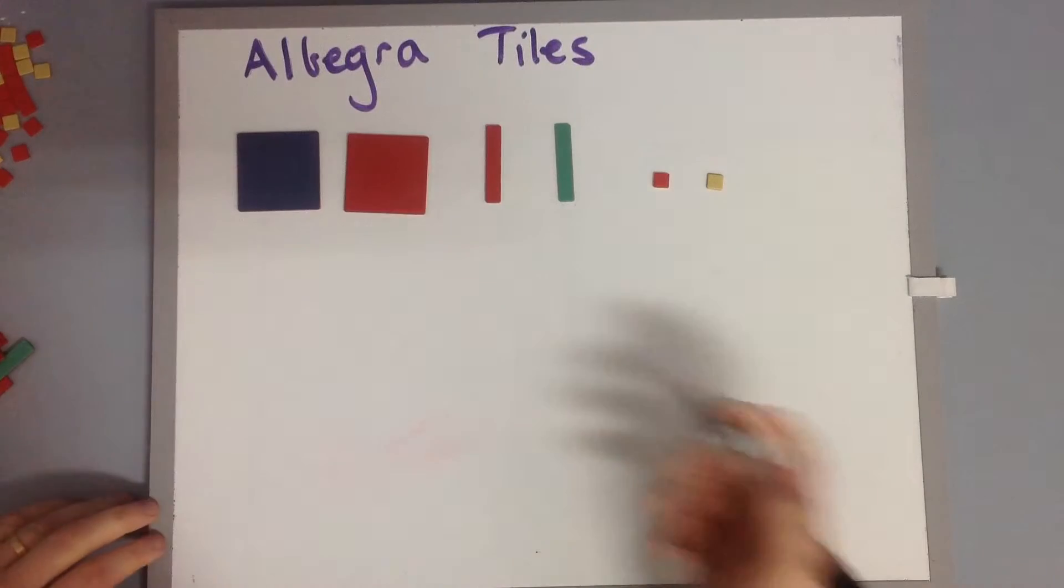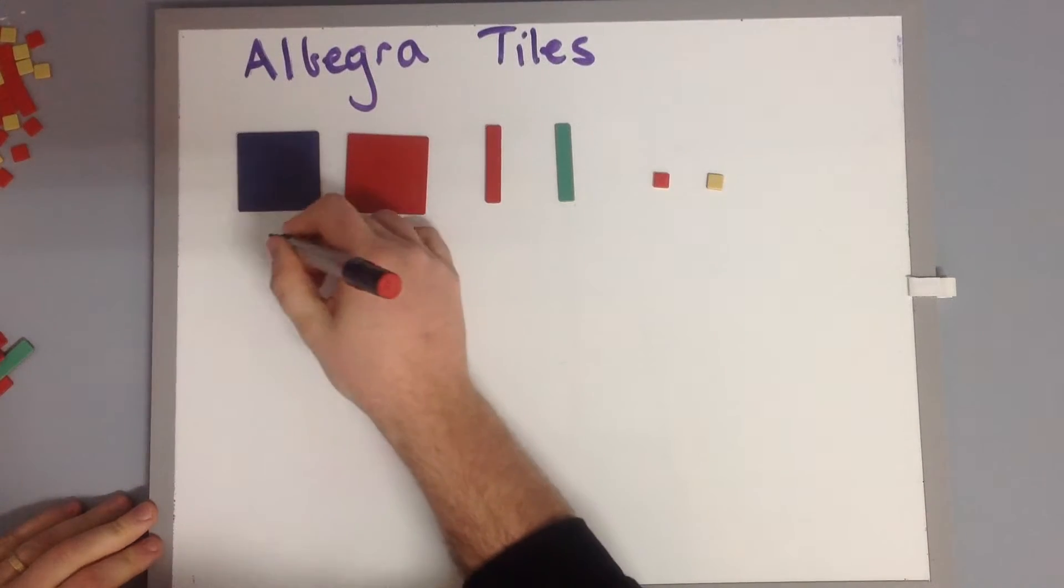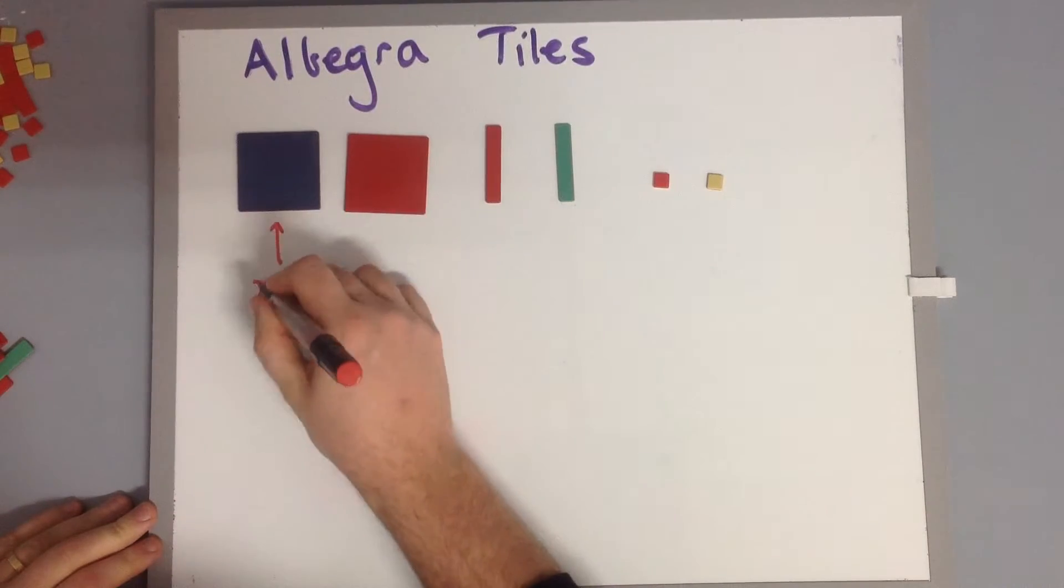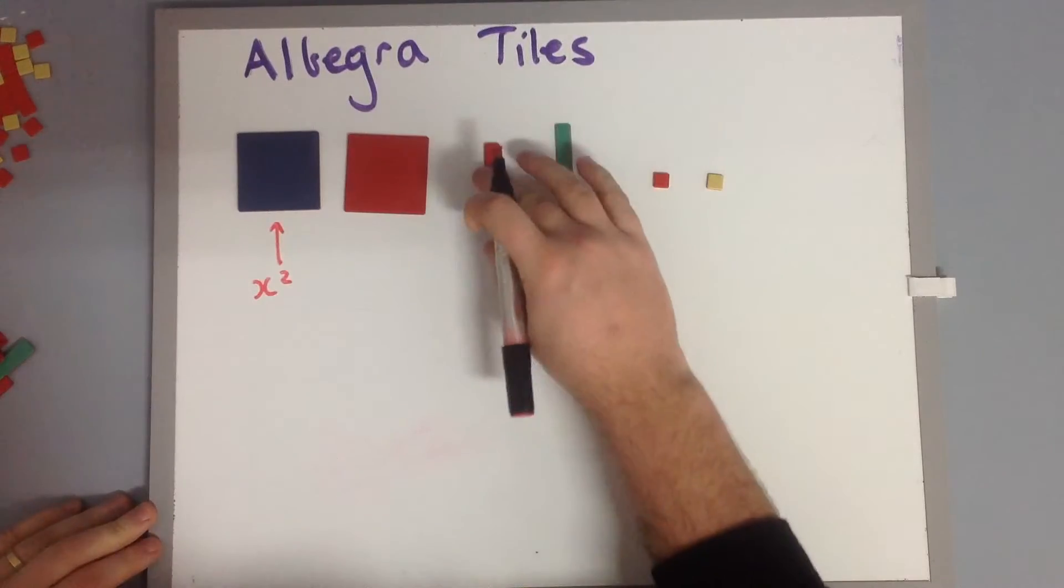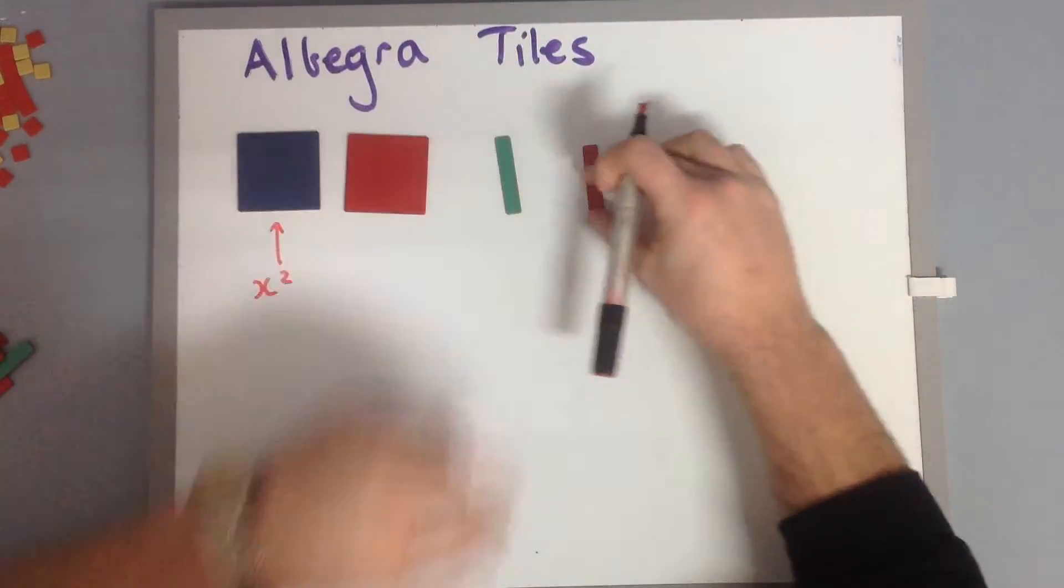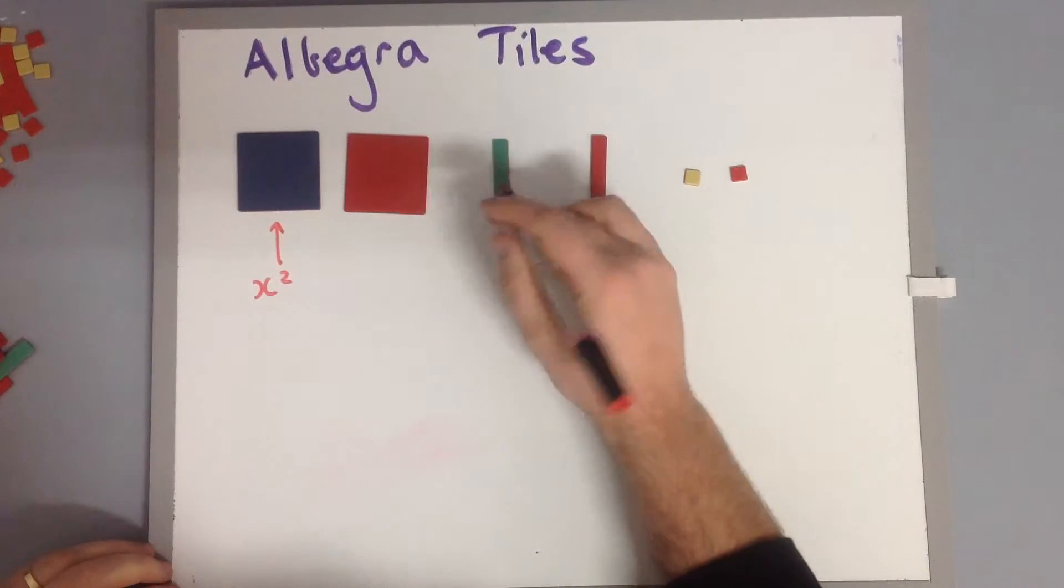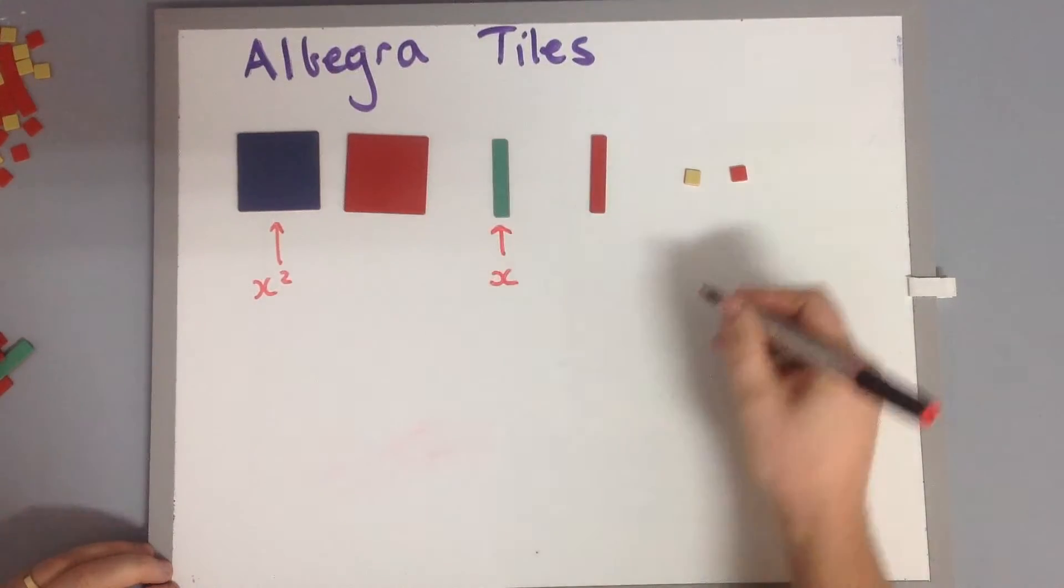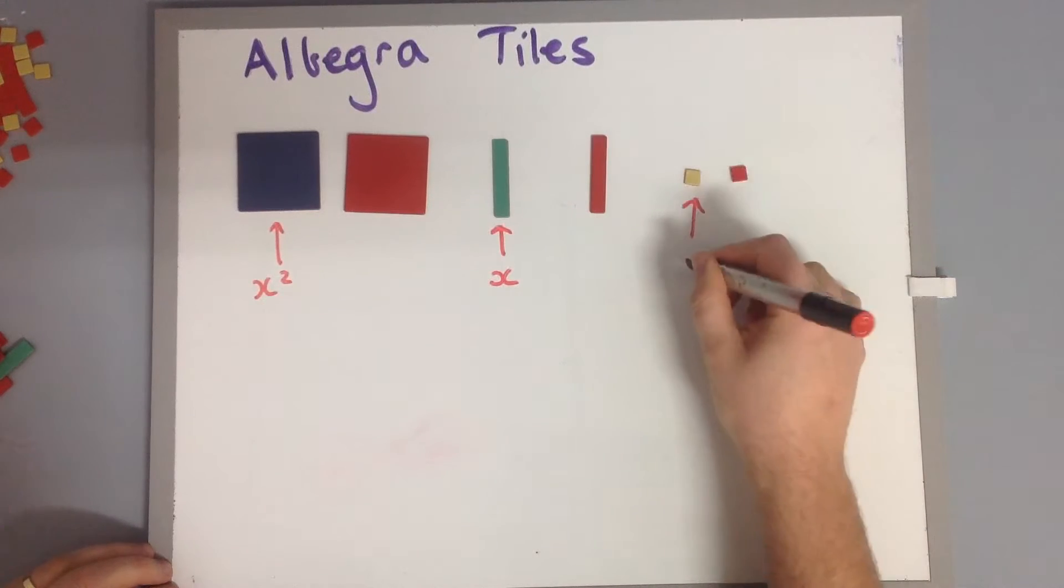Why do we use these? We say that our big ones are x squared. These long ones we're just going to call x, and these little ones we're going to call 1.